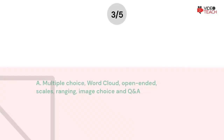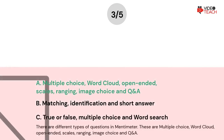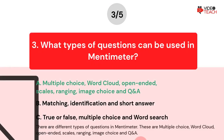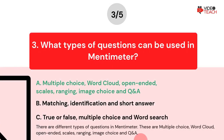The correct answer is A. There are different types of questions in Mentimeter: multiple choice, word cloud, open-ended, scales, ranging, image choice, and questions and answers.